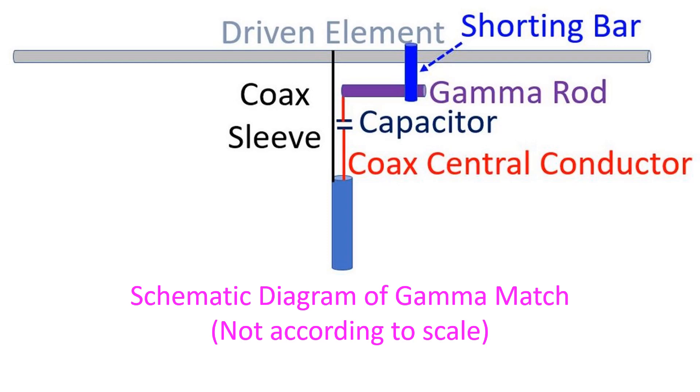The tubing has to be slid in and out to find the lowest SWR while transmitting at low power and later confirmed on high power before fixing the screw on the shorting bar.